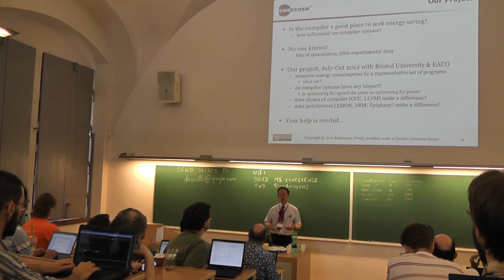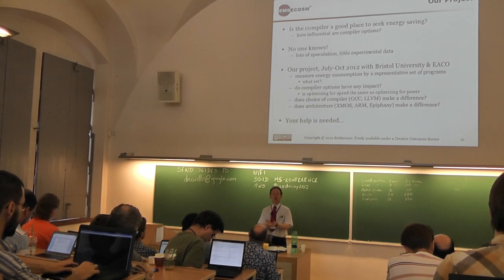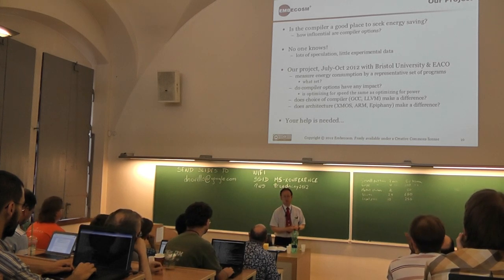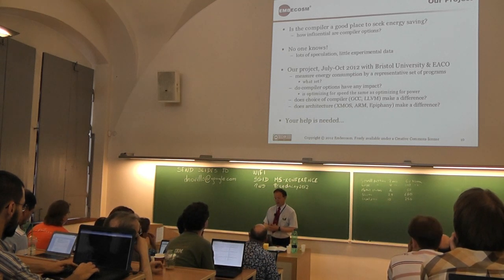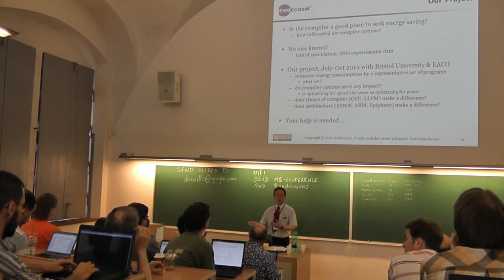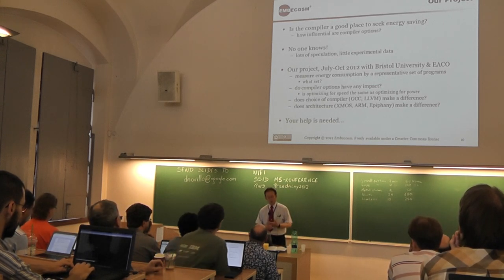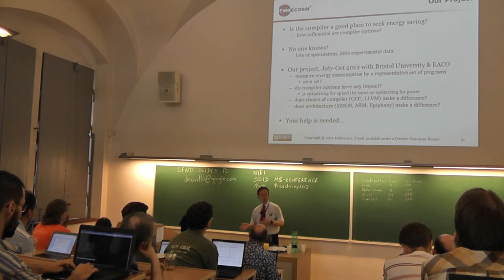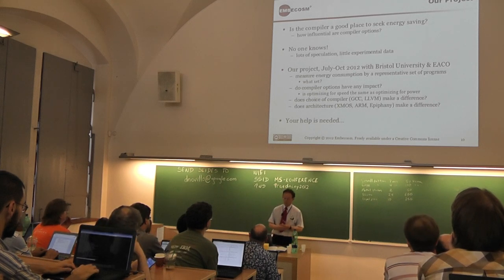We're going to measure the energy consumption of a representative set of programs — and one of the things we'd like your help with is suggestions for what that set of programs ought to be. Do compiler options have any impact? Should we optimize for speed, or are there other optimizations that by localizing memory use mean memory burns less power? Does the choice of compiler make a difference? And is this architecture-dependent — do some architectures show incredible sensitivity to compiler options while others don't? We're going to work with XMOS, ARM, and Epiphany architectures.